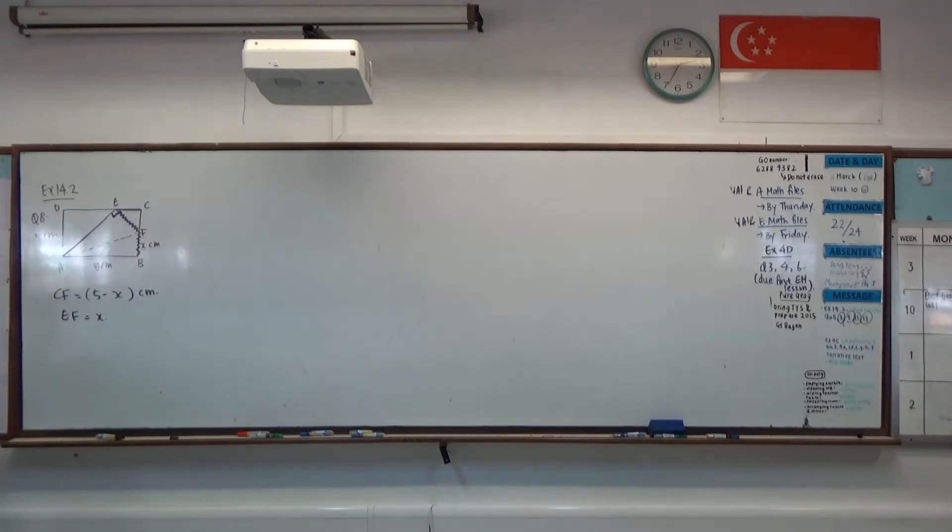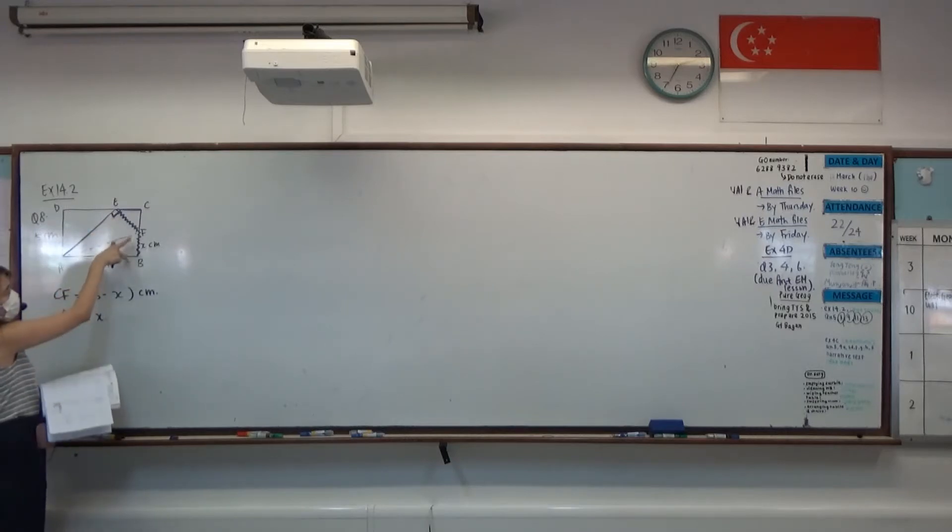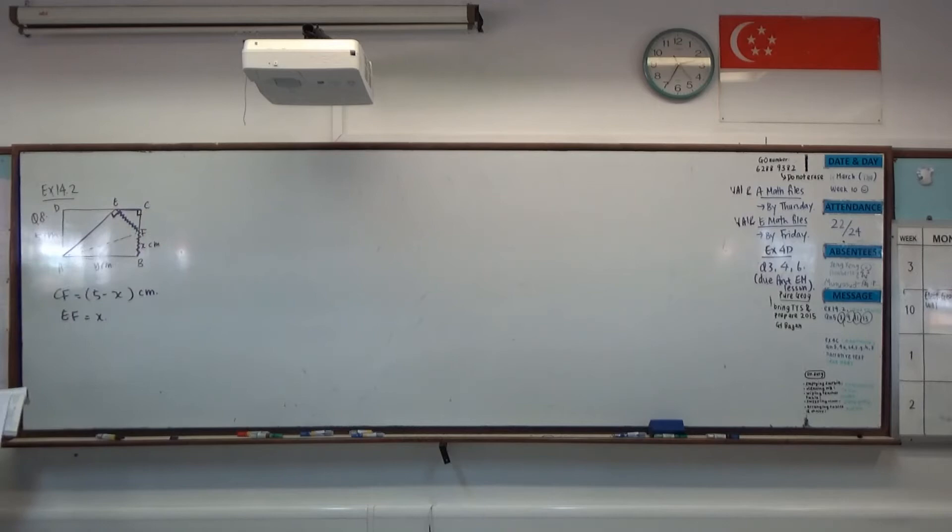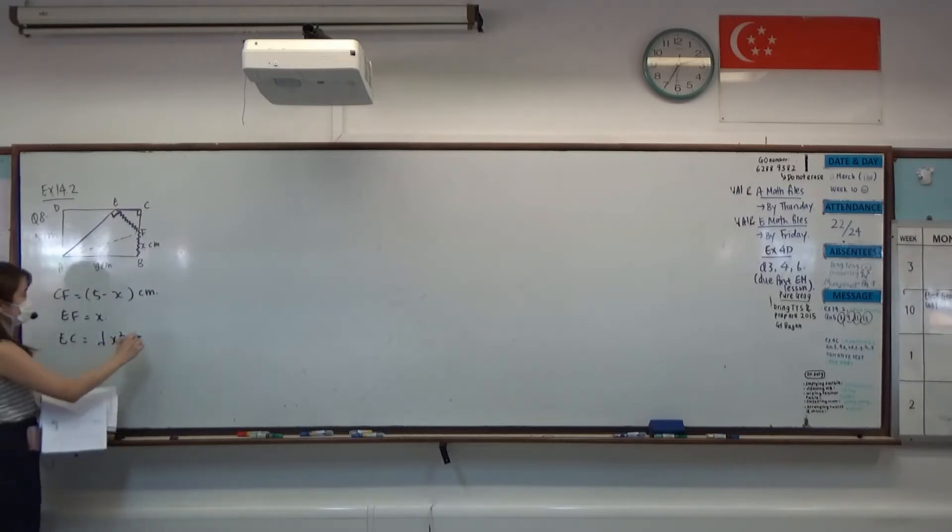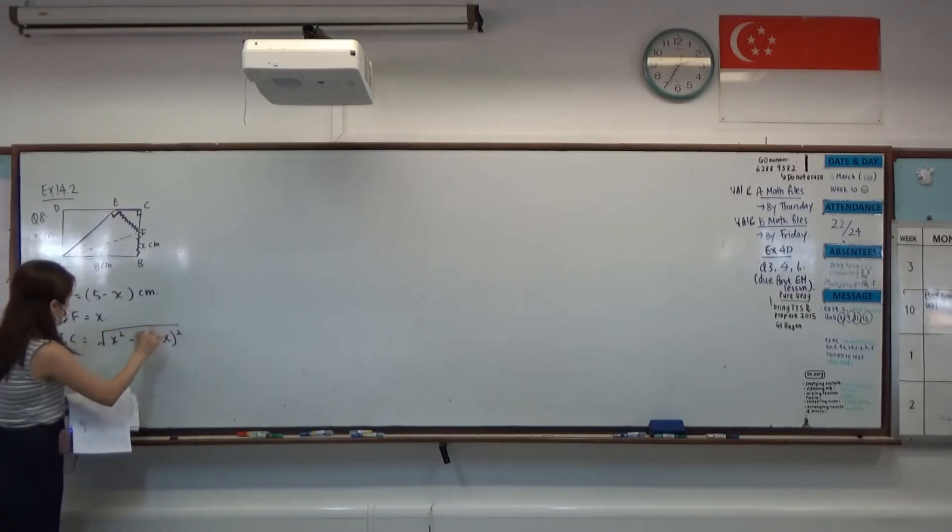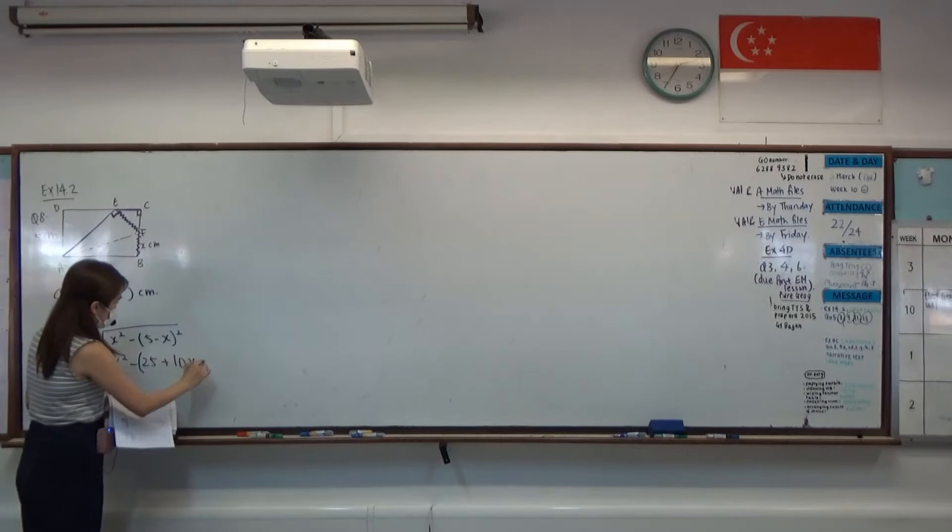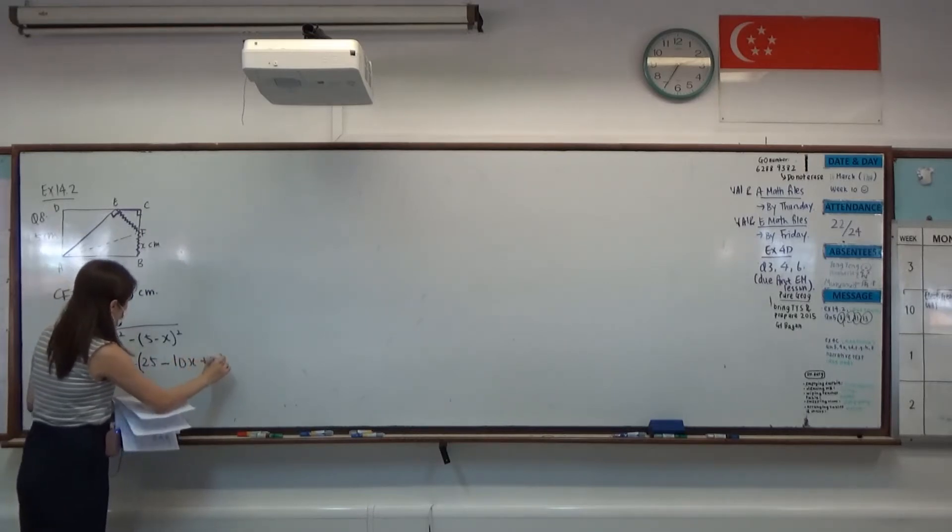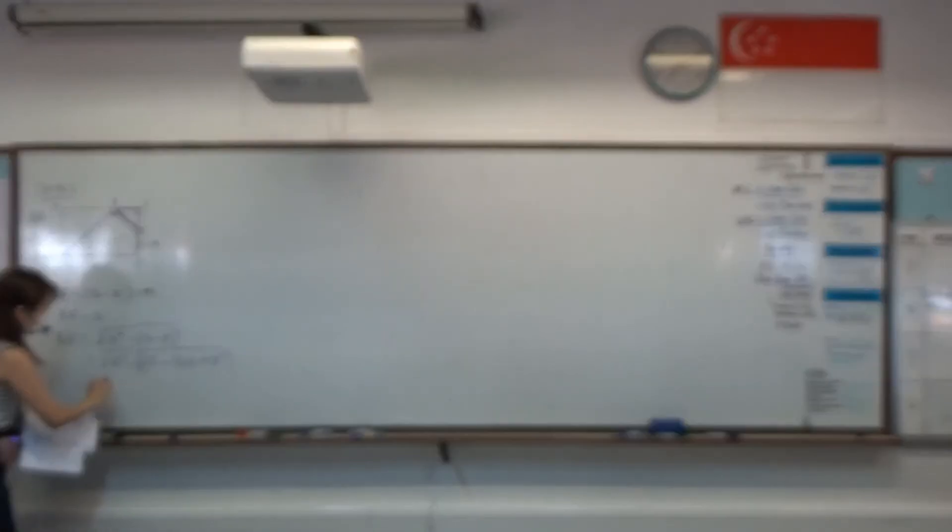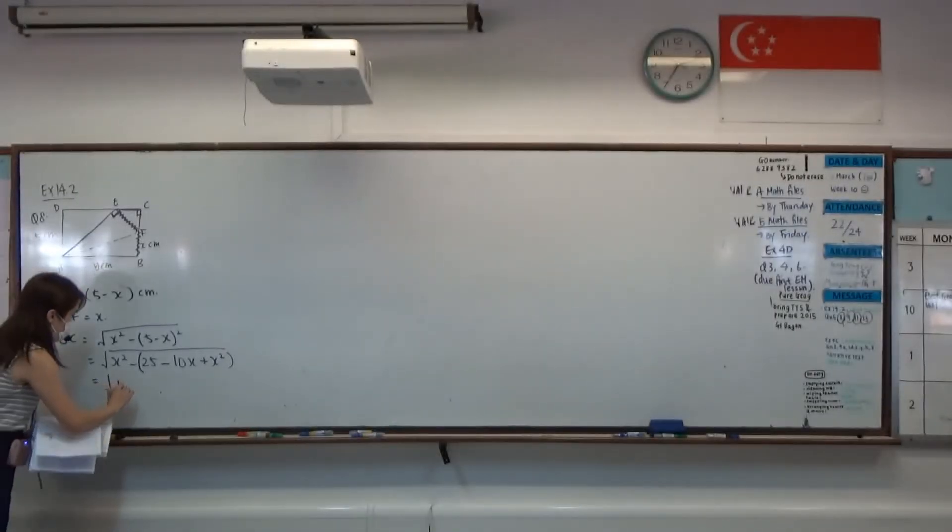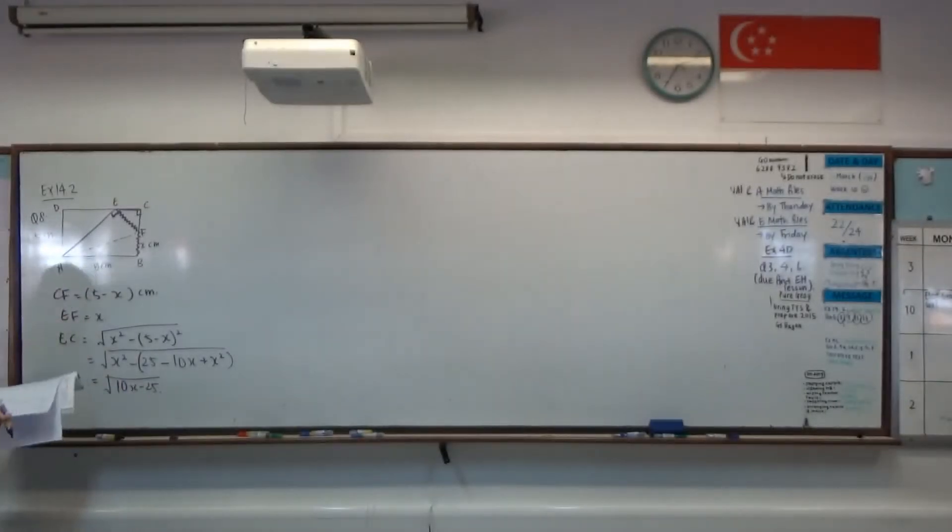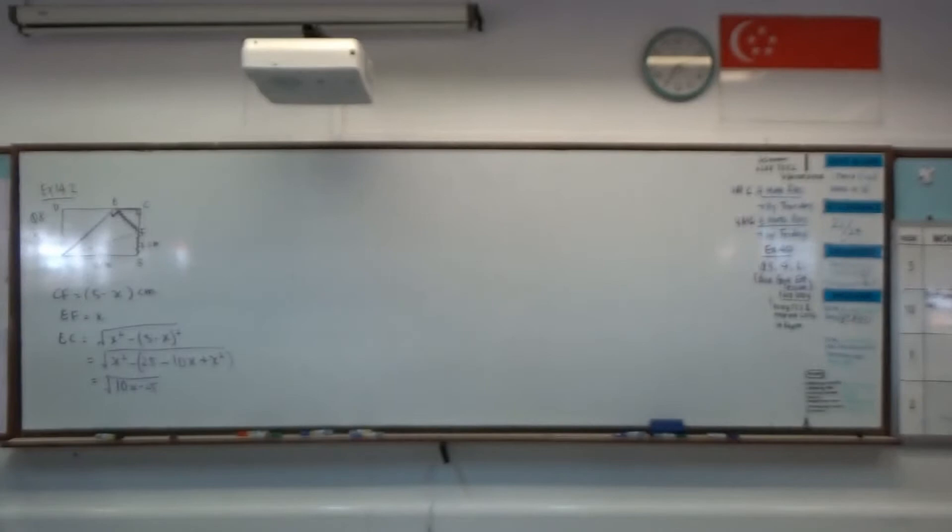You can imagine, try to visualize folding the paper - this length will be the same as this length. Since we are trying to find the length of EC in terms of X, we realize that this is a rectangle, so right angle over that side. So EC is actually equals to the square root of EF, which is X squared, minus away 5 minus X squared. And that would simplify to square root of 10X minus 25.